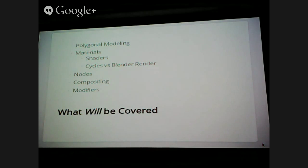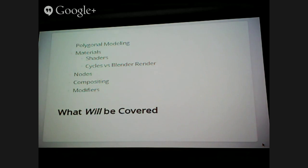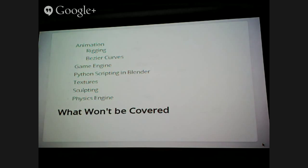What we're going to cover is a small subset of what Blender can do. That includes polygonal modeling, materials — which includes shaders and the difference between the render engines, Cycles and the Blender render engine — nodes, compositing, and modifiers. What won't be covered is animation, the game engine, Python scripting, textures, sculpting, and the physics engine. If any of these interest you, I encourage you to look into them — there is documentation for Blender. I'm also not enough of an expert to talk about them at length.